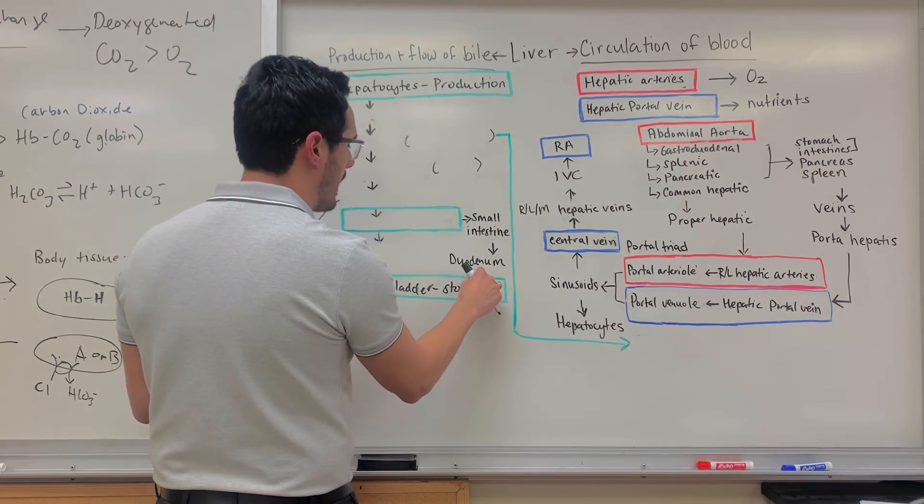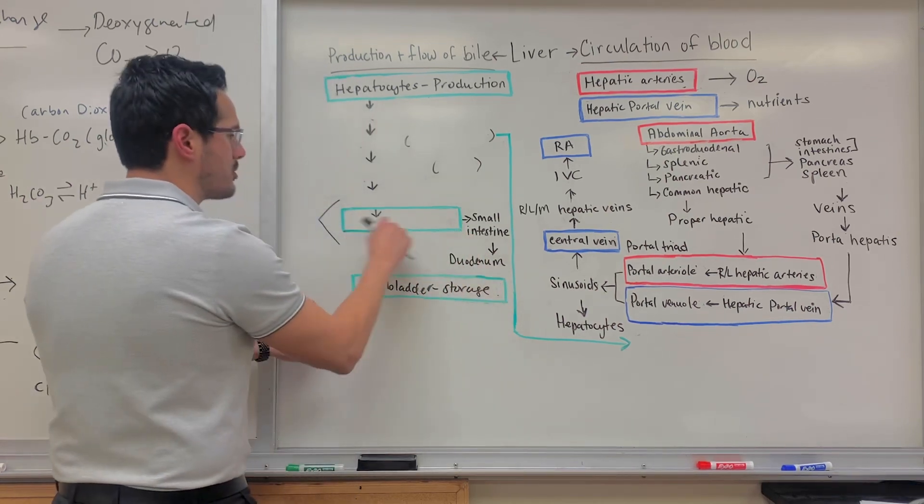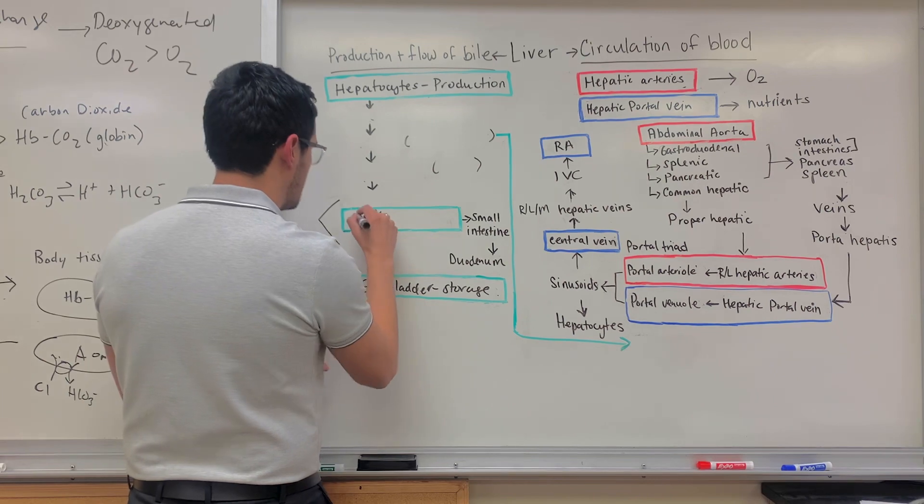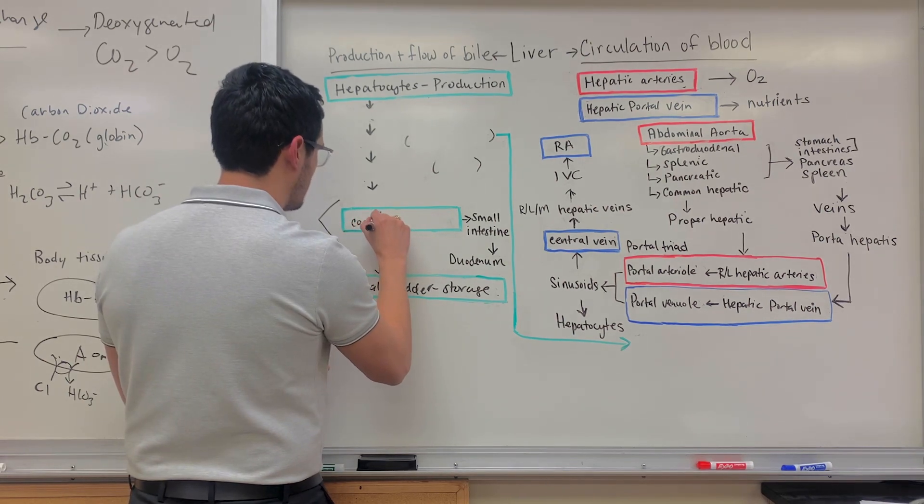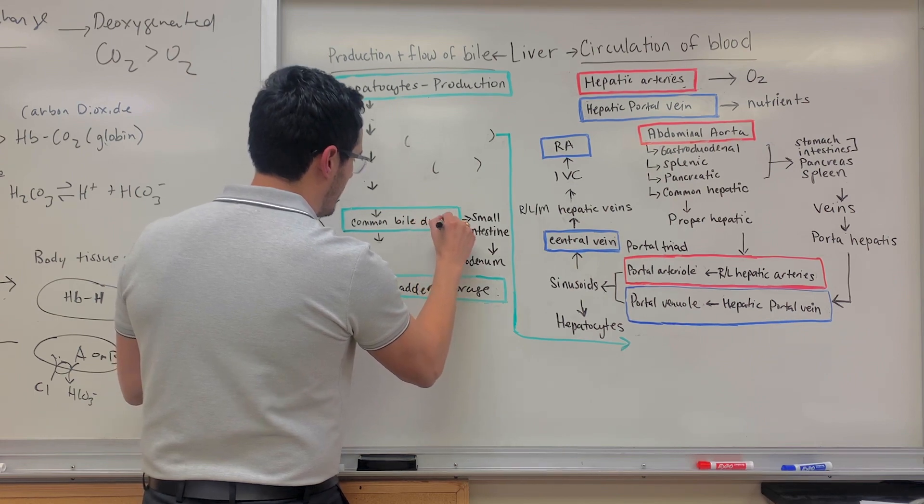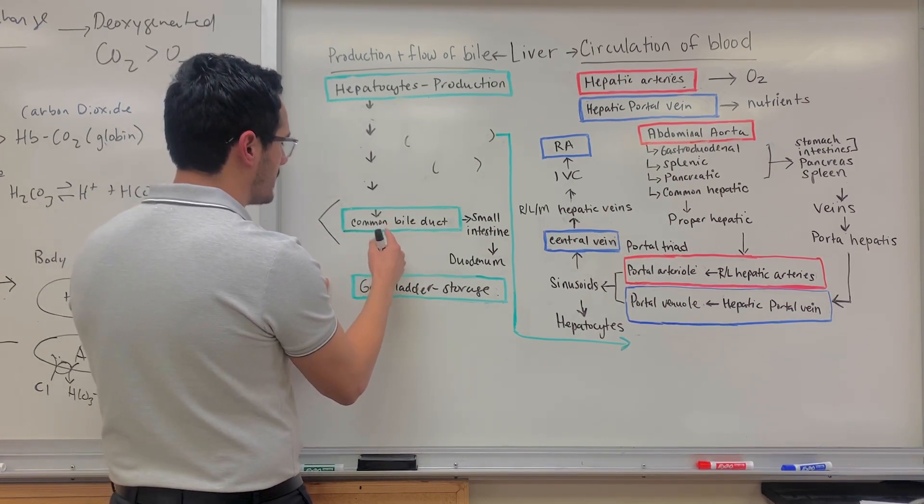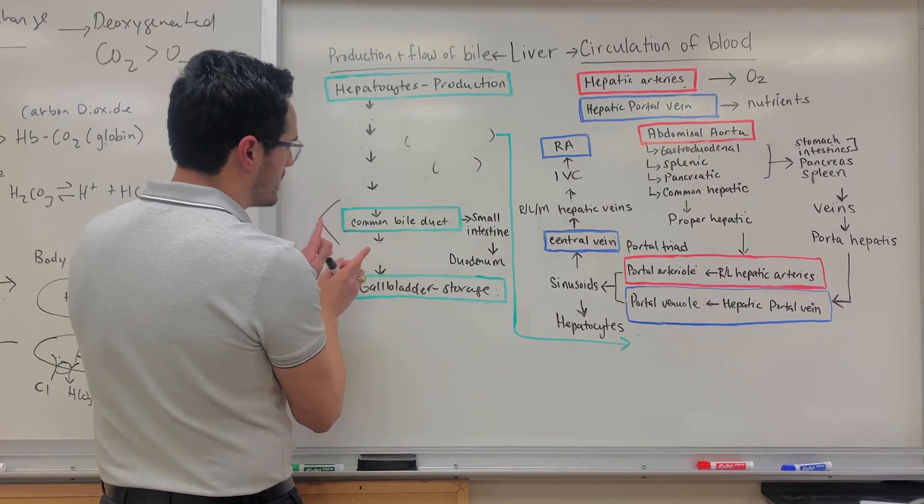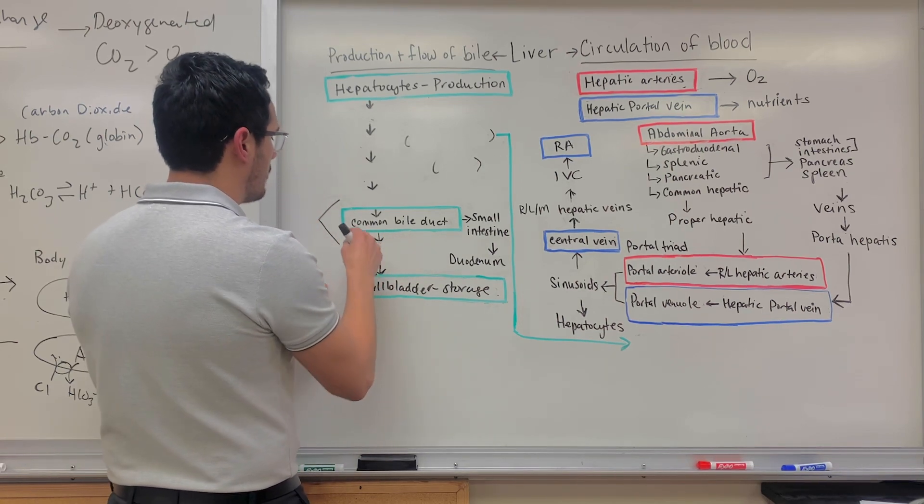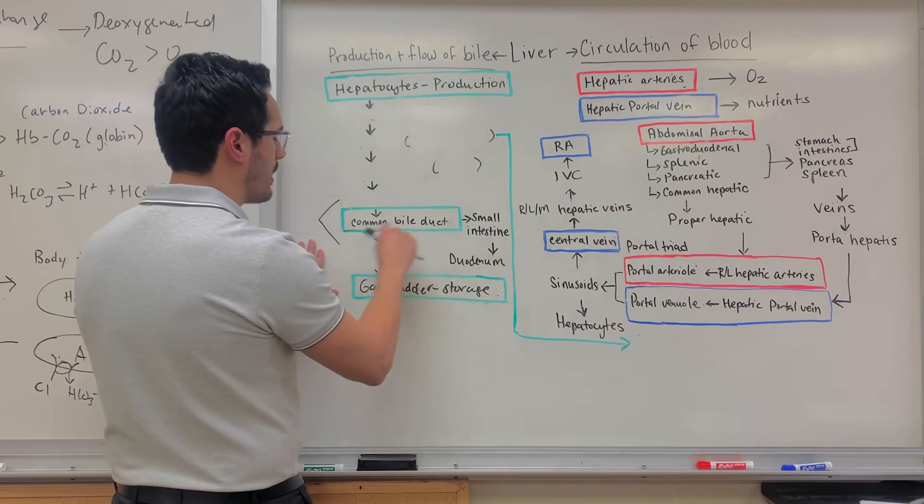Okay, well, how do we get to the point where we're releasing this bile? So it has to travel through something which is known as the common bile duct. And in order to get to the common bile duct, you have two particular structures that are merging together at this point to form the common bile duct.